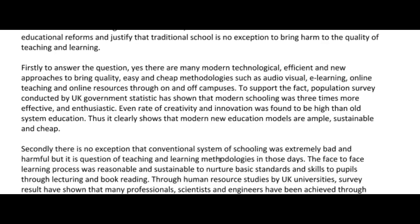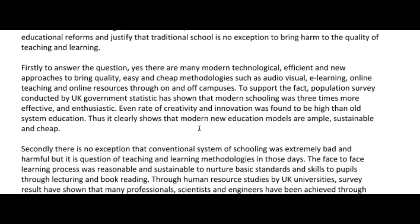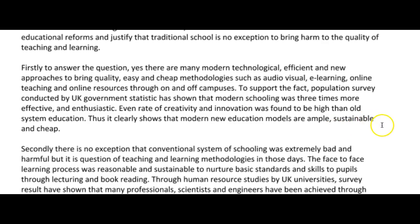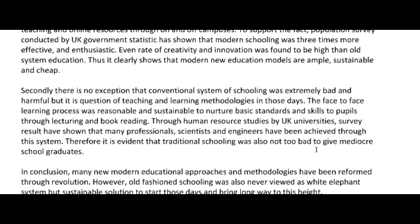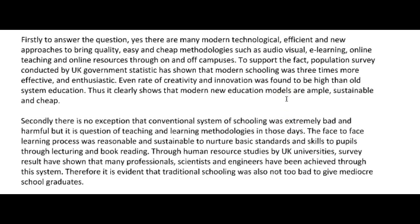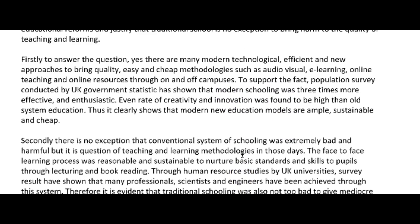Thus it clearly shows that modern new education — we're basically saying the same thing, so just choose one: modern education or new education. Modern education models are ample, sustainable, and cheap — fantastic — although we didn't mention cheap in the paragraph, so just say 'are ample, sustainable, and considerably better.' Good work, and well done for following the sentence guide, but just remember not to keyword stuff.